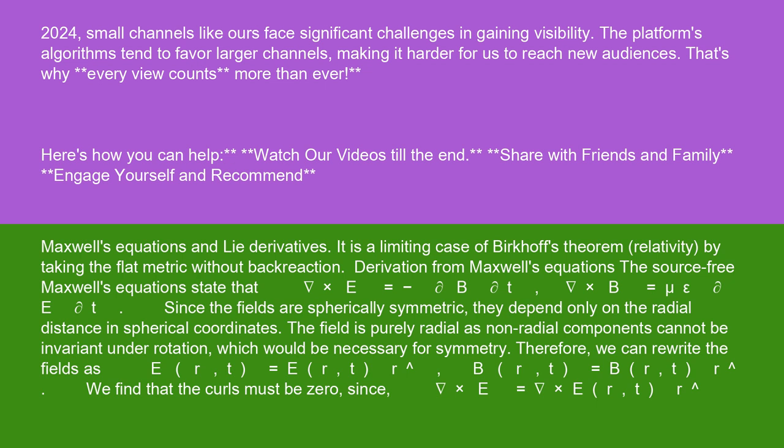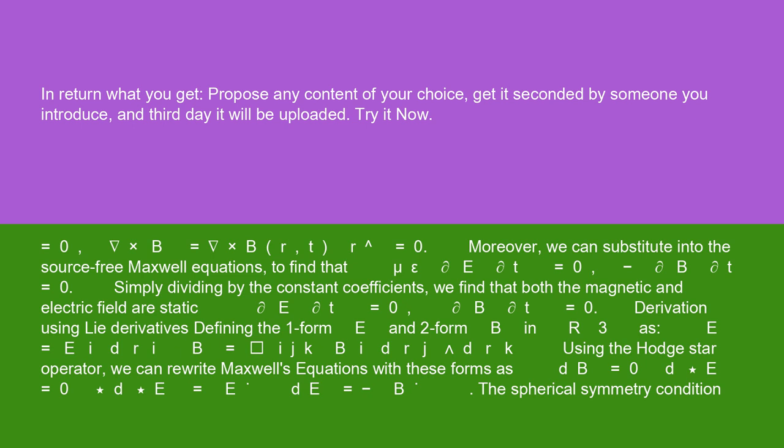The field is purely radial as non-radial components cannot be invariant under rotation, which would be necessary for symmetry. Therefore, we can rewrite the fields as E(r,t) equals E(r,t) r-hat, B(r,t) equals B(r,t) r-hat. We find that the curls must be zero, since nabla times E equals nabla times r(t) r-hat.